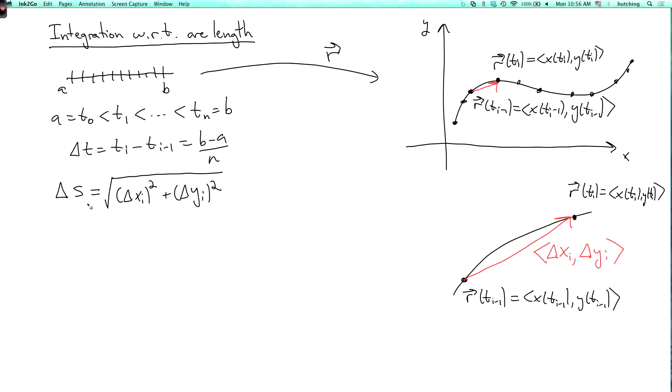I should call this delta si because it's going to depend on i. And this is the length of the vector r of ti minus r of ti minus 1.